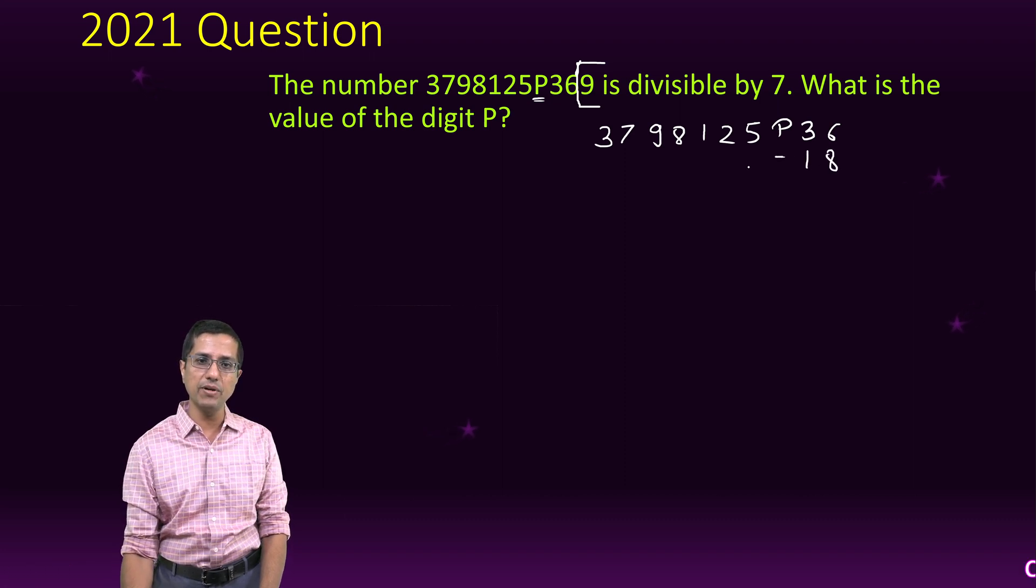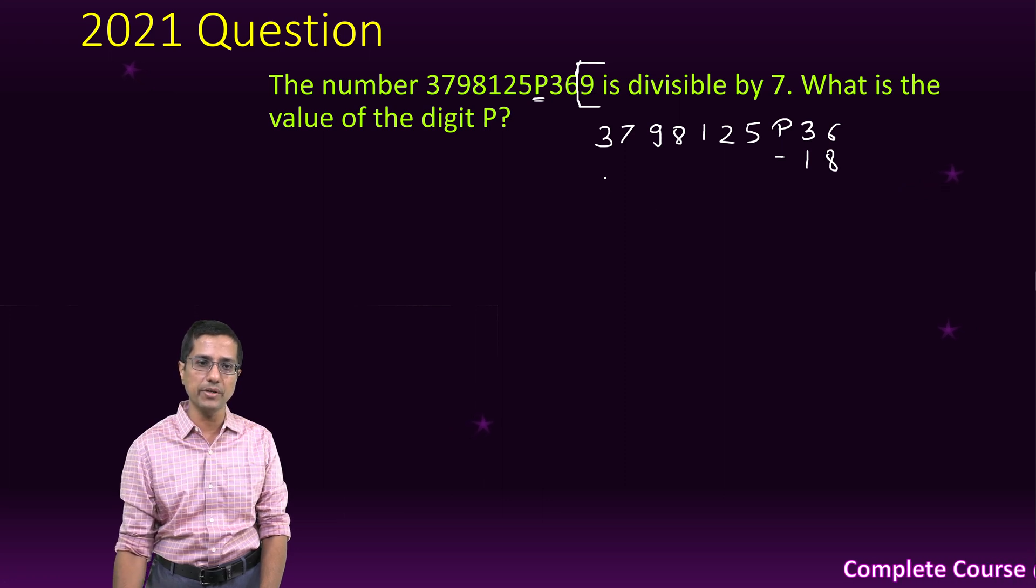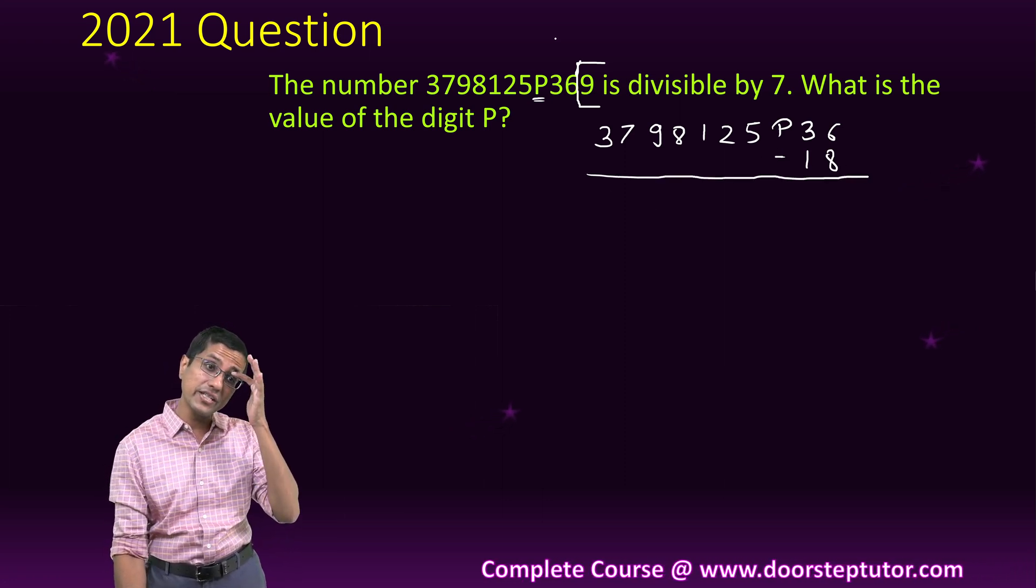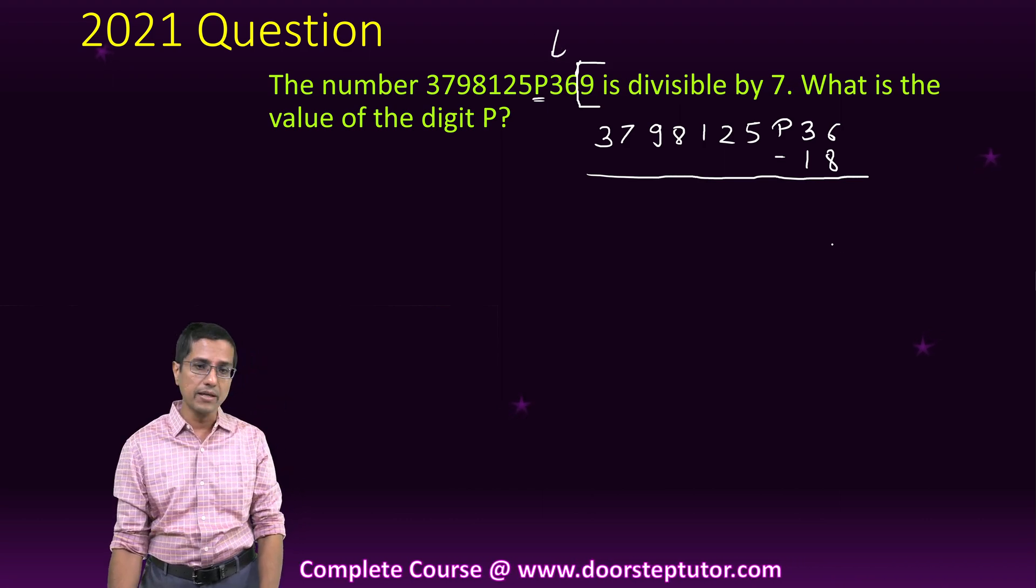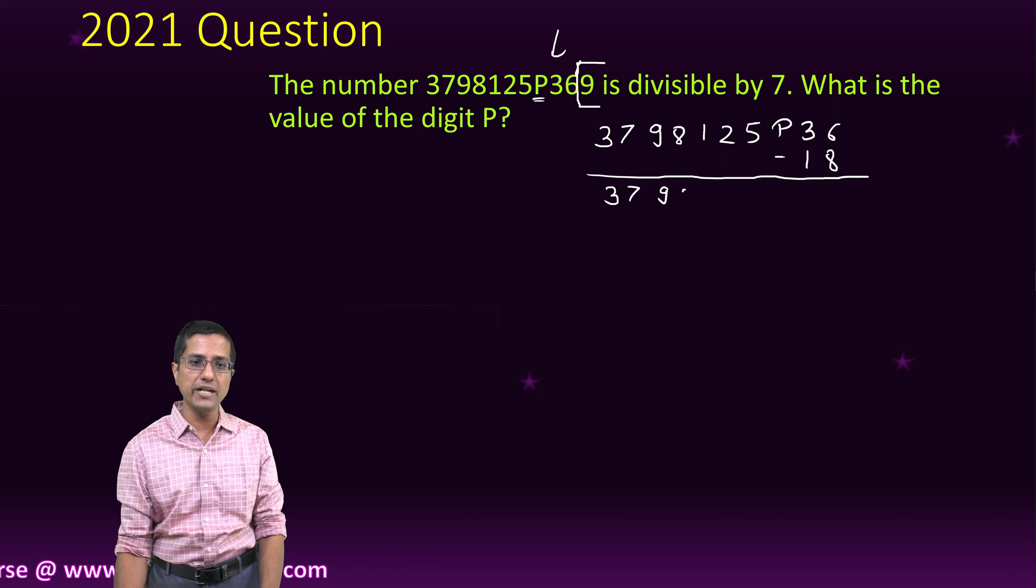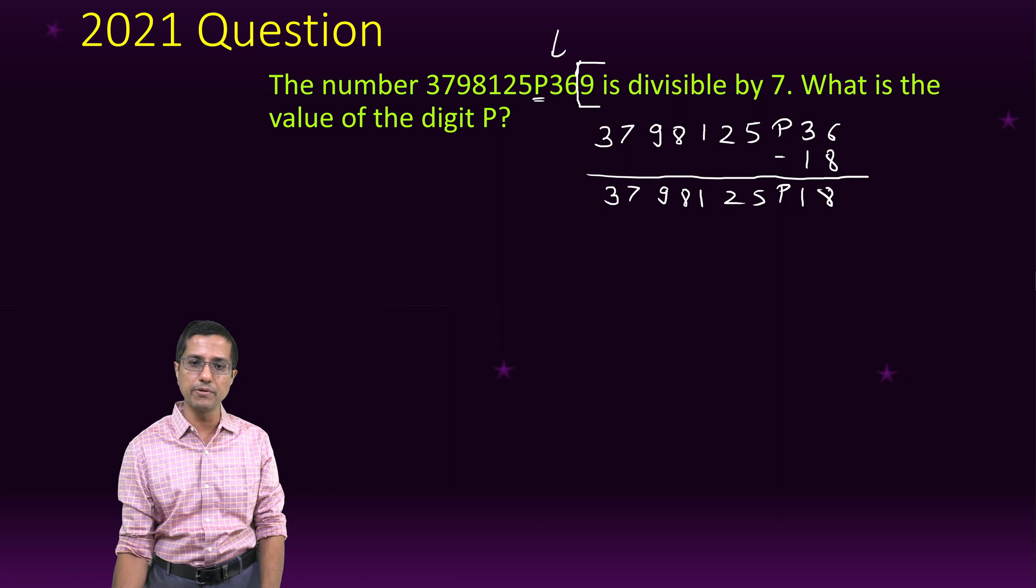9 times 2 is 18, I double this and I subtract it from the rest of the number. The divisibility test of 7 says that because this number is divisible by 7, this number which I get after subtraction would also be divisible by 7. So, this number is also divisible by 7.